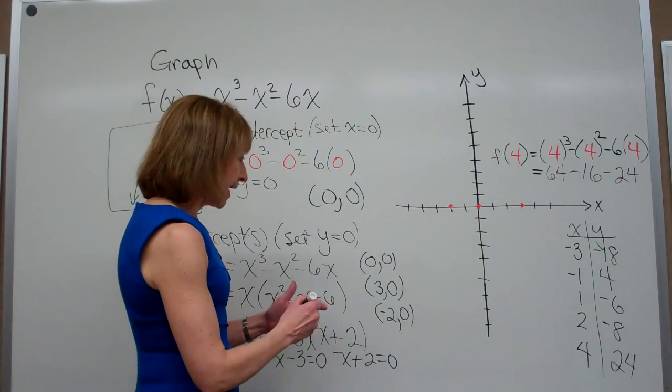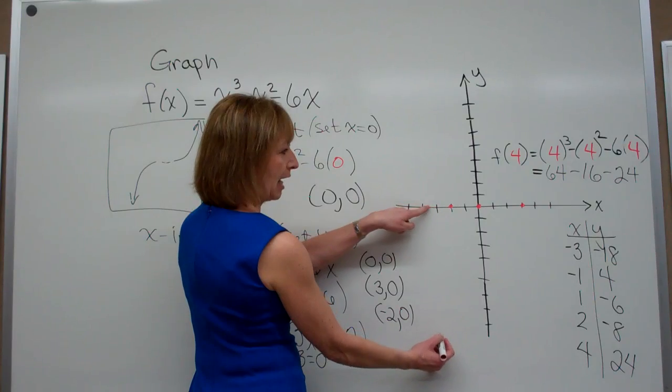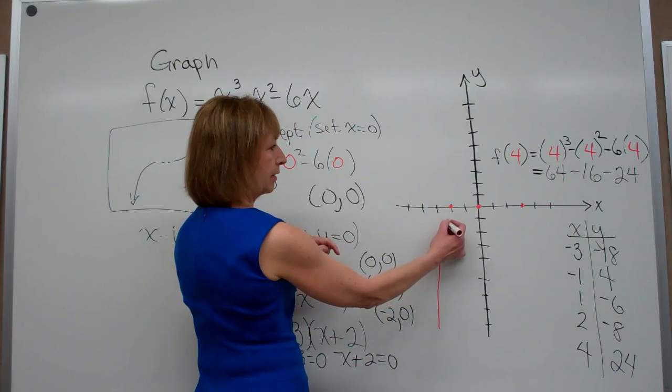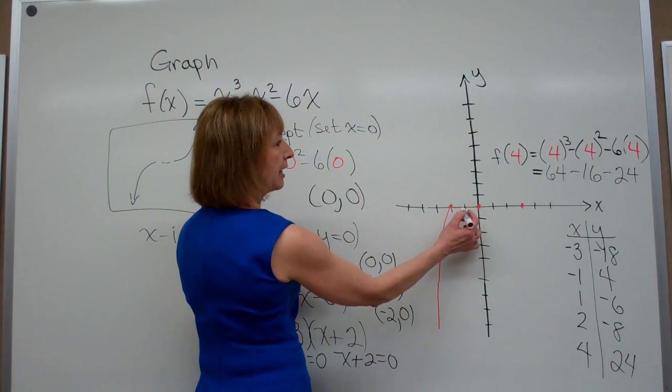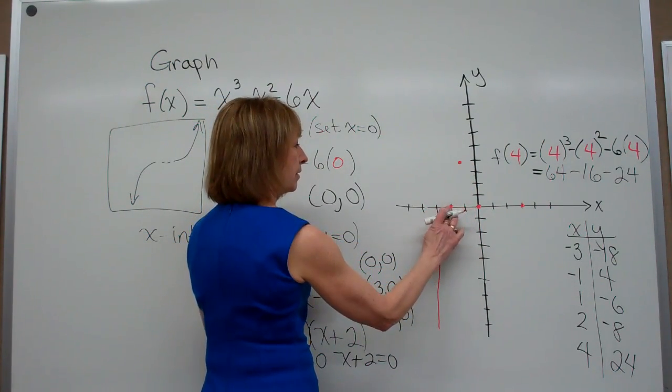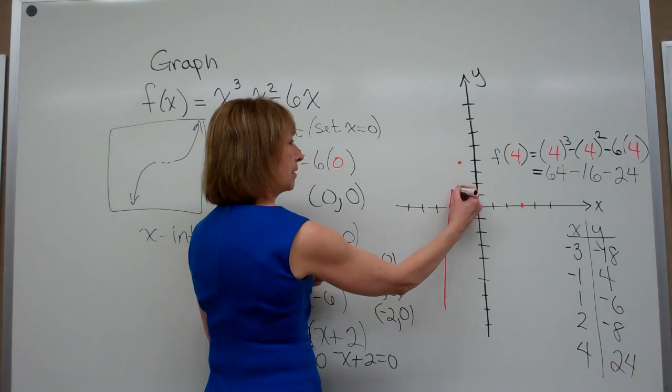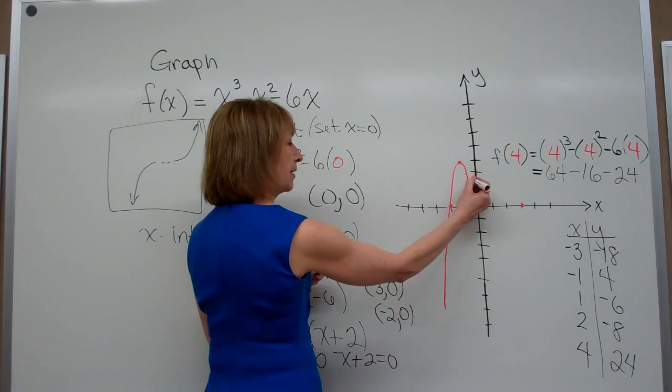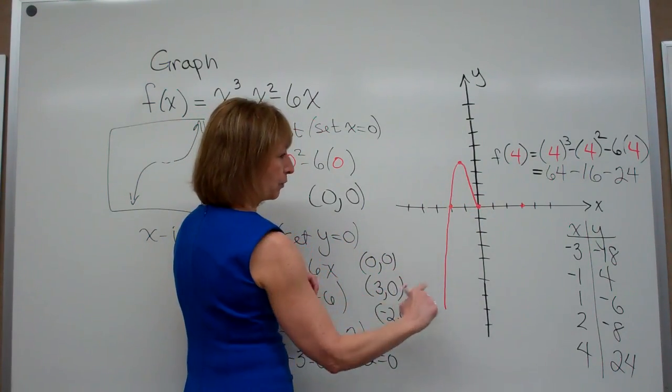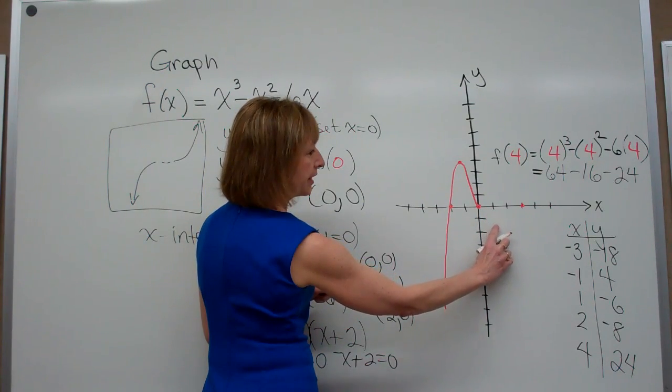So as I graph these, I have (-3, -18), so it comes from down here, goes to that dot. (-1, 4), I'm going to come through this dot, up to that one, and turn around and come down to this dot at our y-intercept of (0, 0), and that was also one of our x-intercepts. At 1, we have -6.